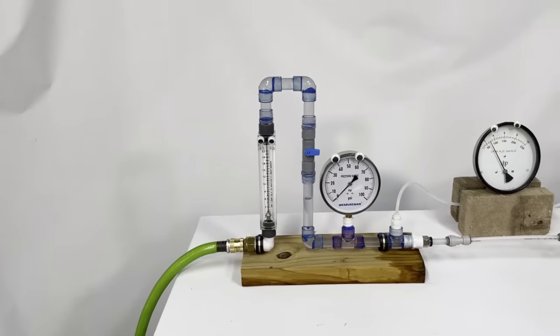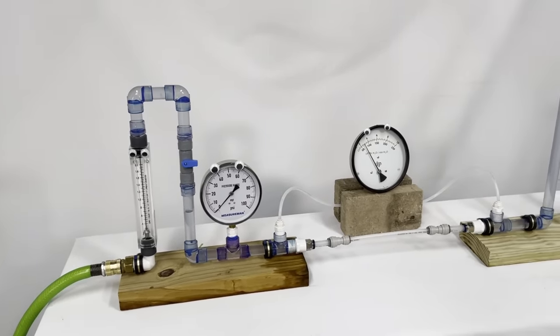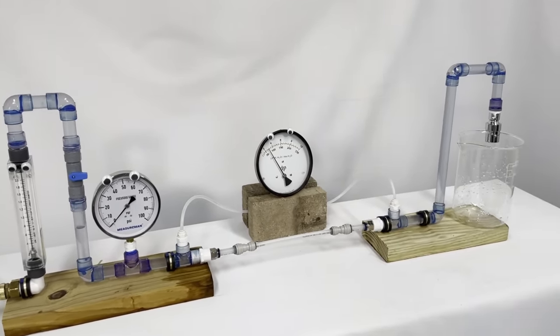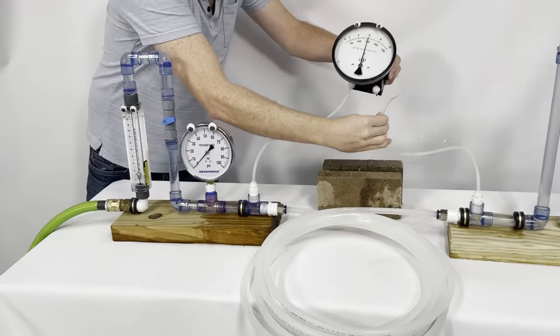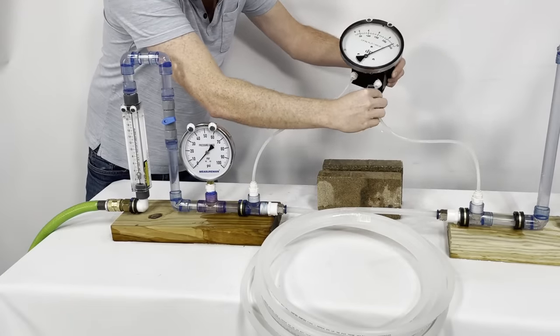I use these clear pipes because they look cool, but there won't be much to see inside. All the information we need will show up on the gauges, as long as I bleed all the air from the lines each time.